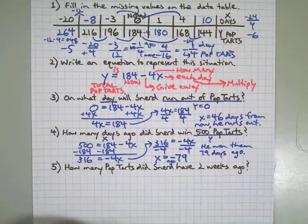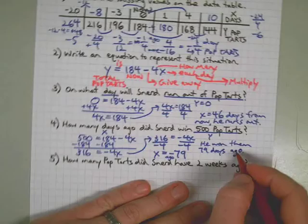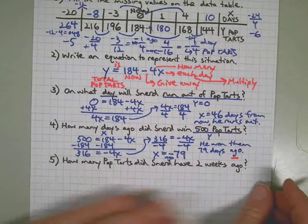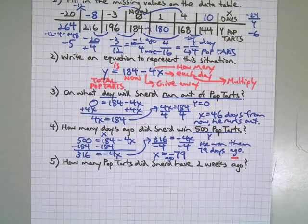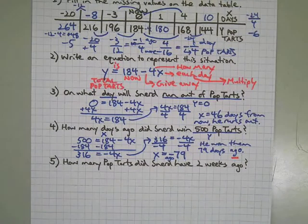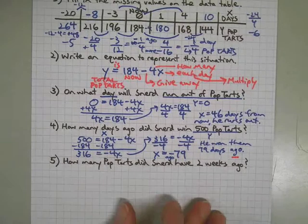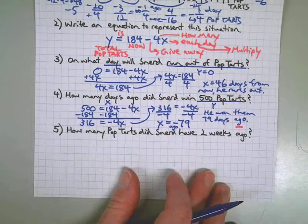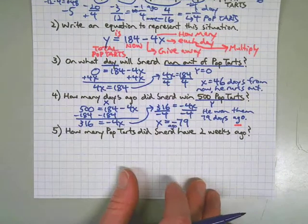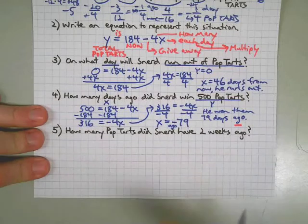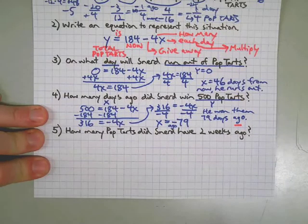And the key thing here is the word ago means negative, right? That means in the past. Days ago, that's going to mean a negative x value, just like we got for our answer. And one final question - of course I can make up 50 questions based on this table, but the point is you understand that we're substituting because we know what all the variables mean here.